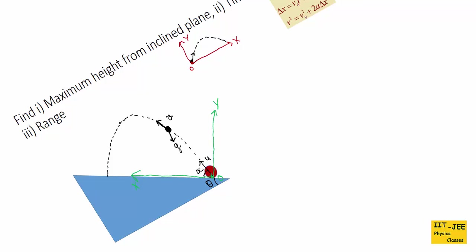The initial velocity is u. Its component along x is ux = u cos alpha, and its component along y is uy = u sin alpha. The same way, we have to split the gravitational acceleration vector.